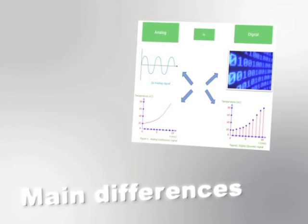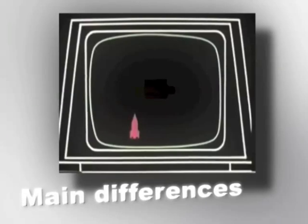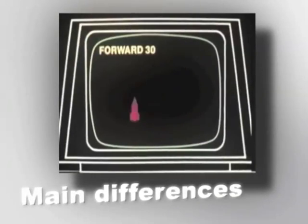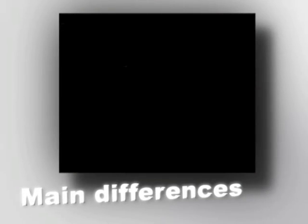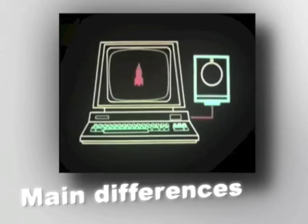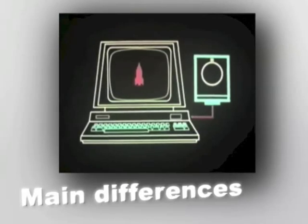Analog computers are special purpose machines, while digital computers can be programmed to solve a lot of different problems. Analog computers provide approximate answers, as they are designed to represent electronically some magnitudes of the real world, whereas digital computers are accurate and provide exactly the right answer. Digital computers must be programmed before being used for any specific purpose, while programming on analog computers is not necessary — calculation relations are built in and are part of them.